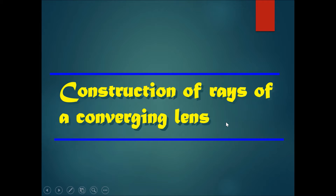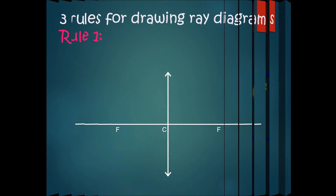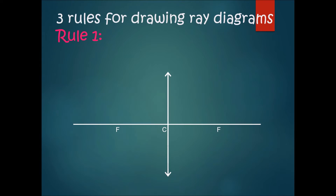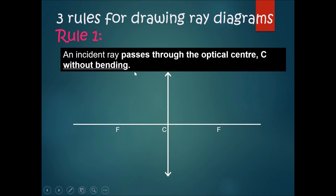Now let's talk about the construction of rays of a converging lens. This is very important and you'll be asked quite commonly in your examinations. There are three rules for drawing ray diagrams — you follow steps one, two, and three.